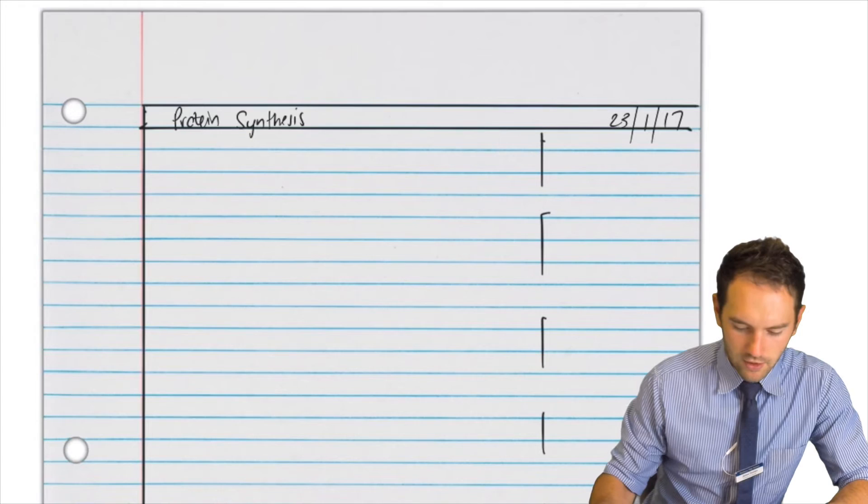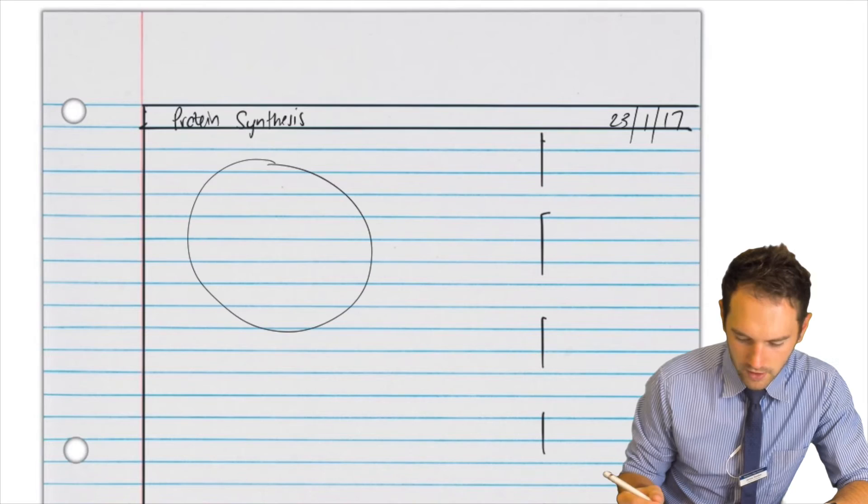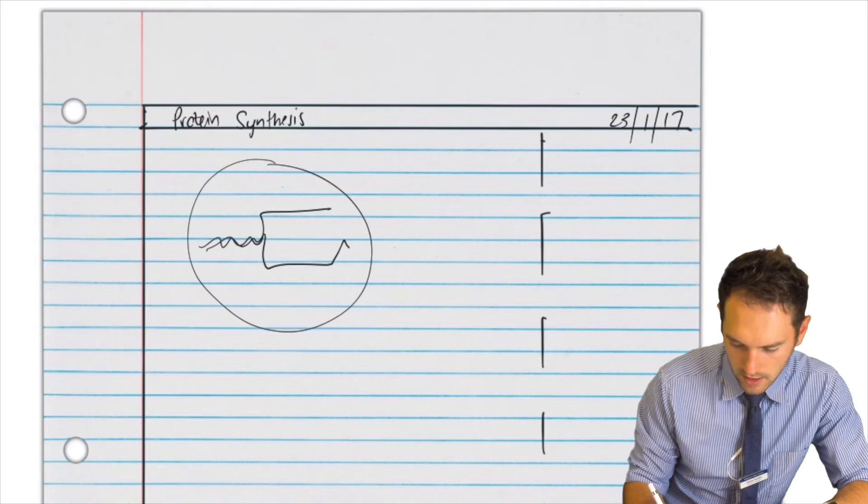Okay, so here we write our notes, protein synthesis. So we might draw a diagram, for example, of the nucleus and we're saying that our DNA is being unwound, blah, blah, blah. And we're writing our notes.